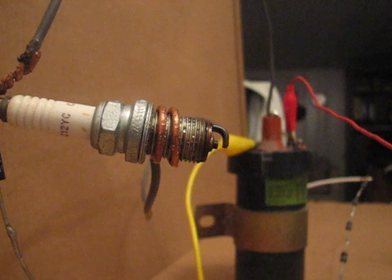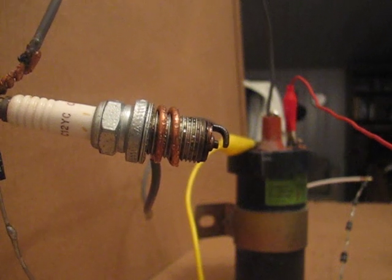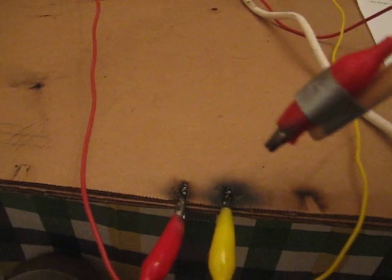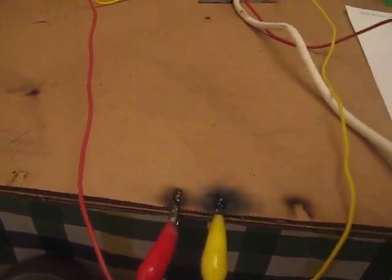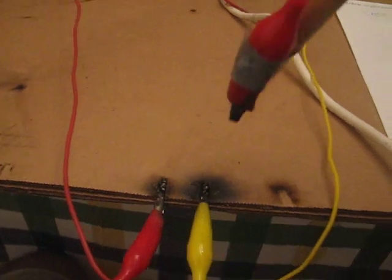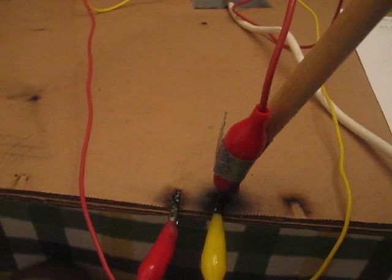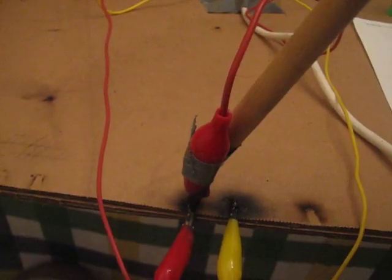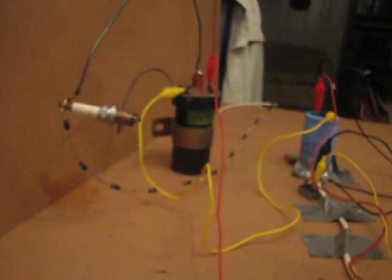So this is it. Right now I'm using these probes to switch between the two halves of the circuit. When I touch this here I'm charging the capacitor, then when I touch it here I'm discharging it into the coil.